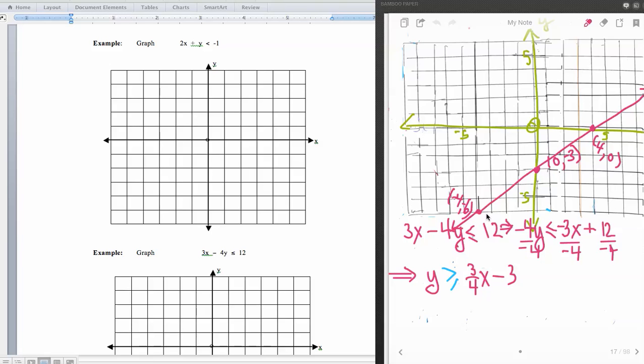So our inequality now looks like y is greater than or equal to 3 quarters x minus 3. And so now what I have done is I've graphed this line. Here's my y-intercept, rise of 1, 2, 3, run of 1, 2, 3, 4, or rise of negative 1, 2, 3, and run of negative 4.